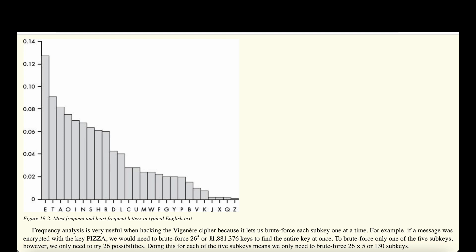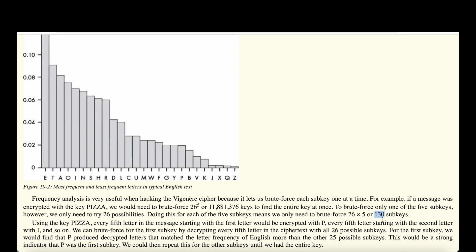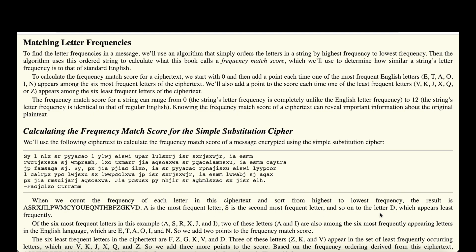That's around 11.8 million keys to brute-force and evaluate. But if we can brute-force each sub-key at a time, we only need to try 26 possibilities per key. Rather than 26 to the power of 5 different possible keys, we just need to try 26 times 5, which is just 130 options — making it much more realistic to break a message encrypted with a Vigenère cipher.